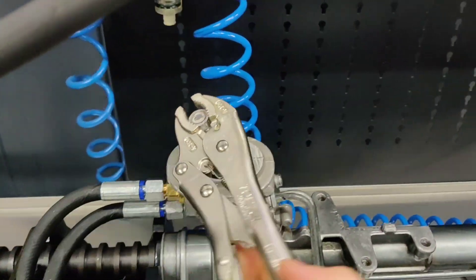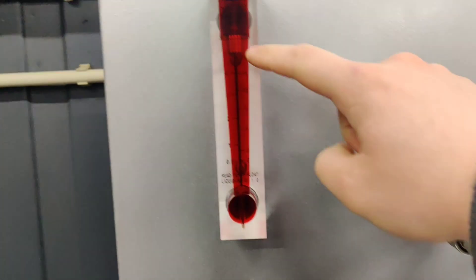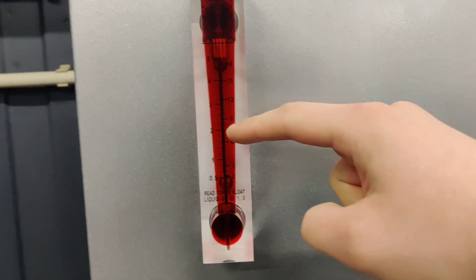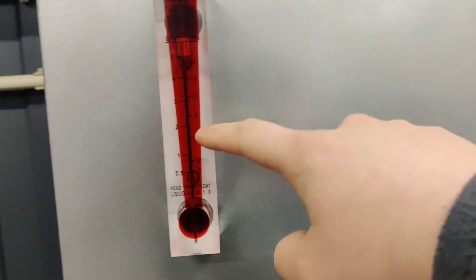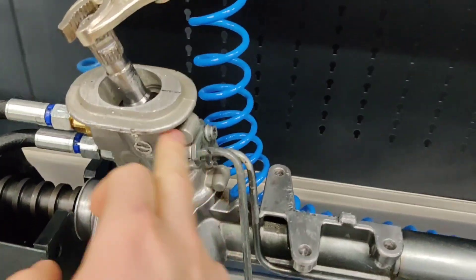Because if, for example, I close the rack like this, and the flow meter will show me, for example, middle position, it means that I have a leakage somewhere in this place.